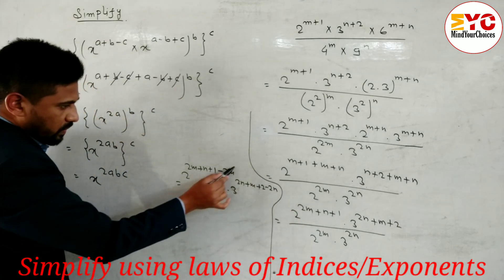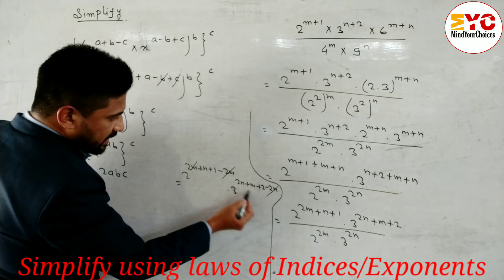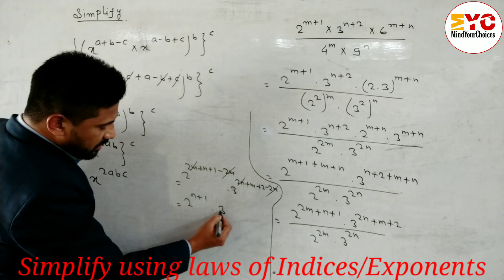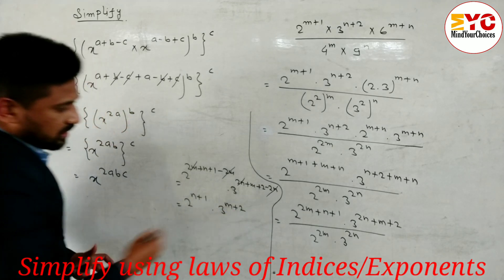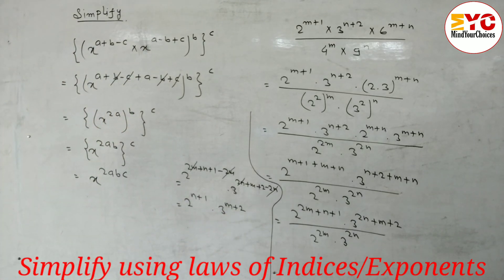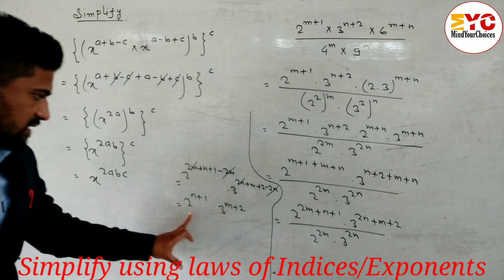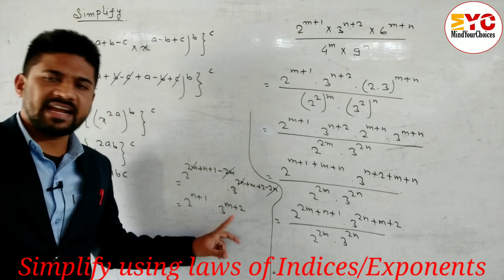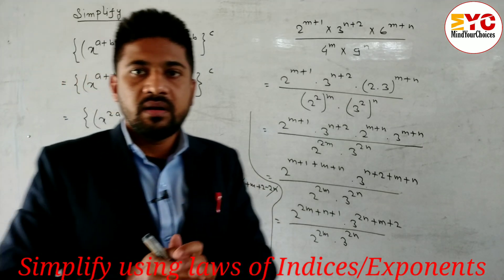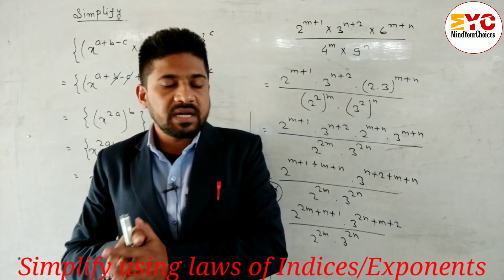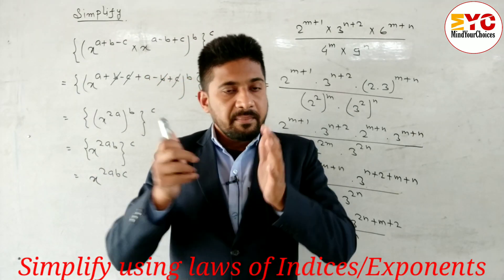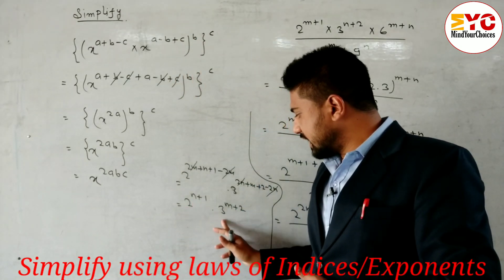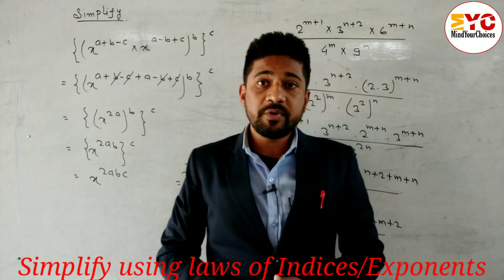Now we can cancel: 2m and 2m cancel, and 2n and 2n cancel. What is remaining is 2^(n+1) × 3^(m+2). You can see the bases are not the same — here is 2 and here is 3. Since the bases are different we cannot combine them further. Base same is required to add powers in multiplication, and to subtract powers in division. So the final answer is 2^(n+1) × 3^(m+2).